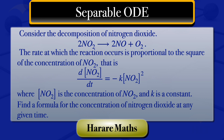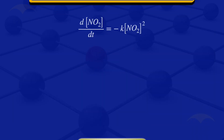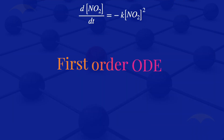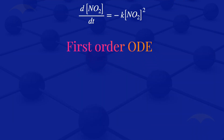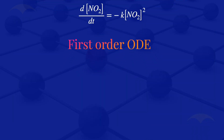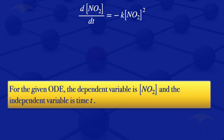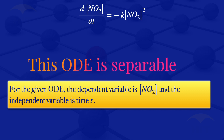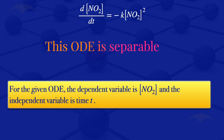Given that equation, that's an ODE where the dependent variable is the concentration of nitrogen dioxide, and the independent variable is the time T. By inspection, we can see that this differential equation is separable.